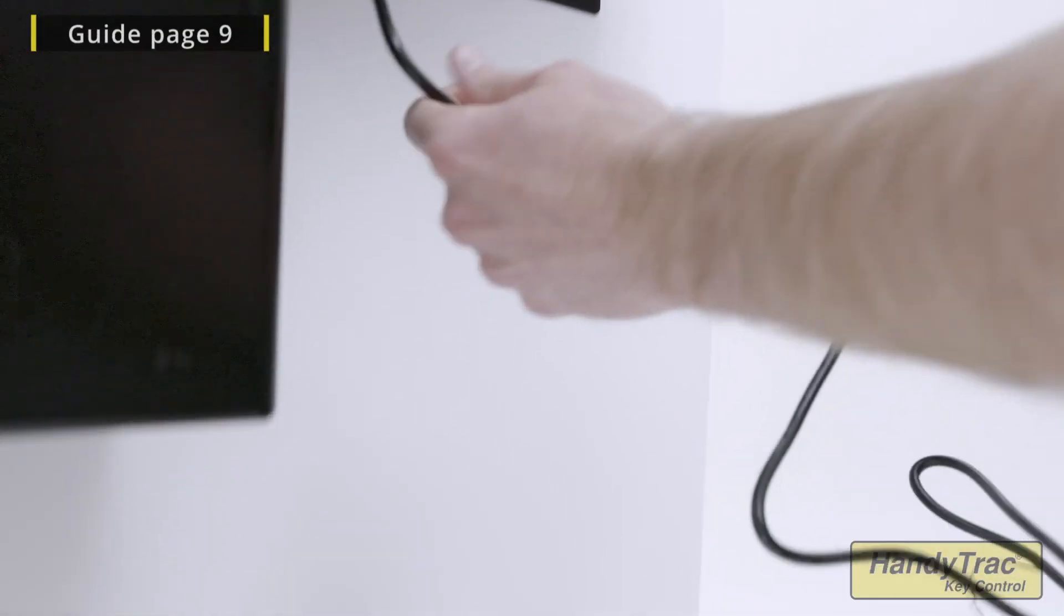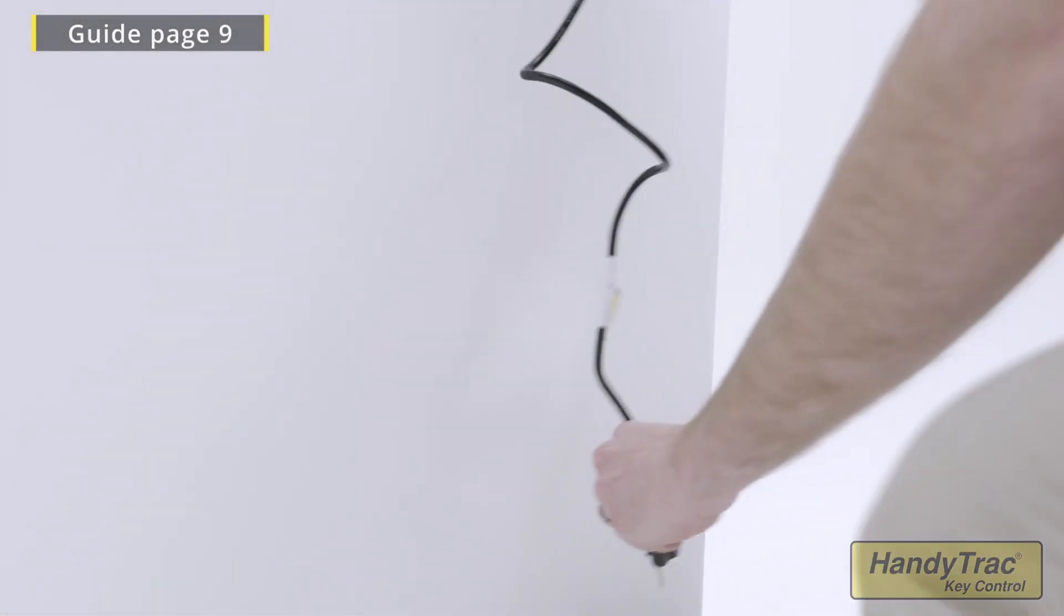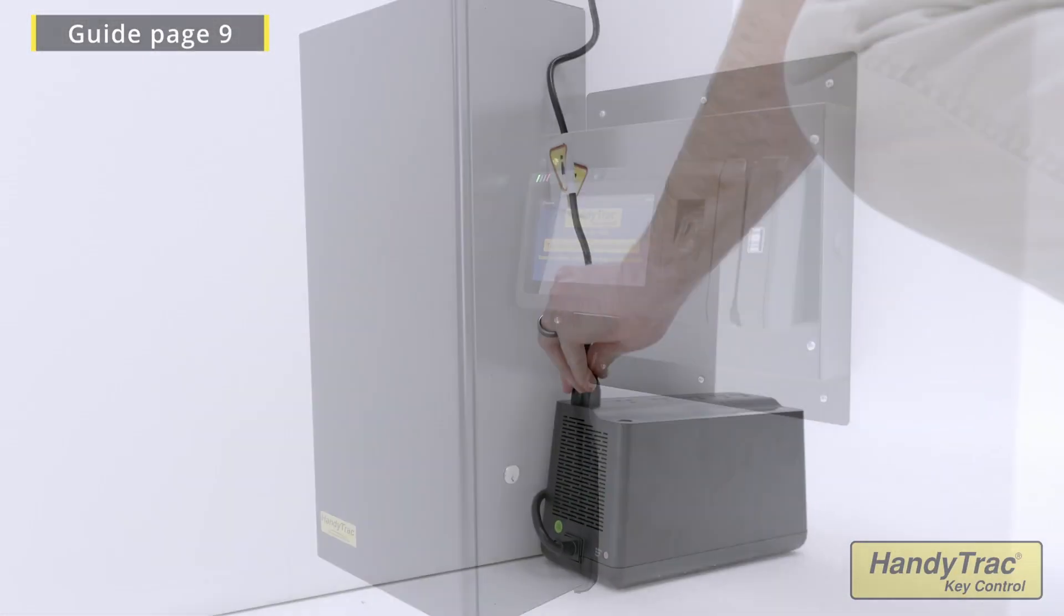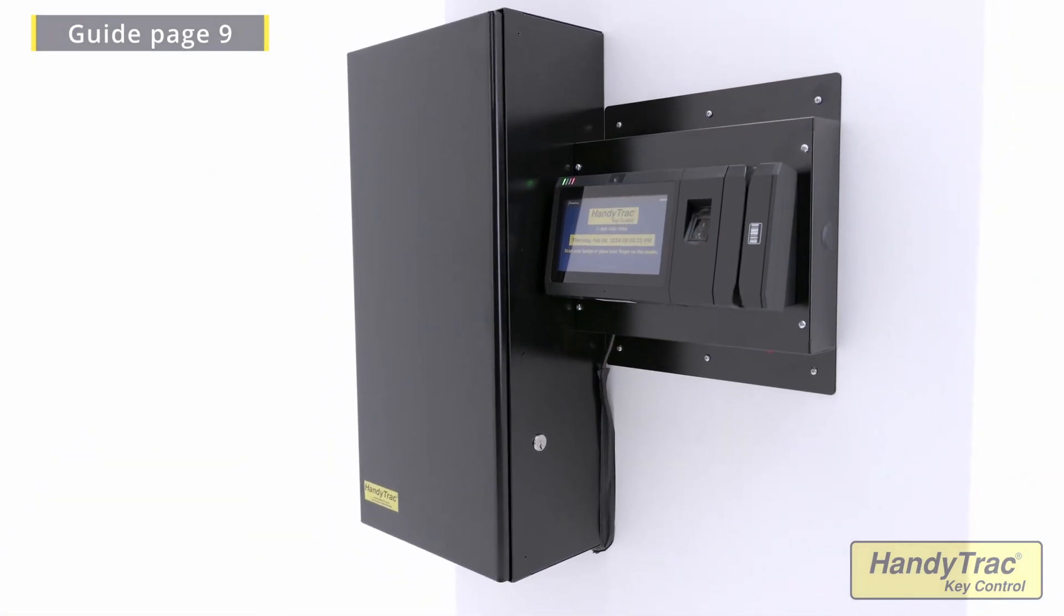Now, plug the power cord into the Surge Plus battery side of the UPS and your HandyTrack system is ready to establish communications.